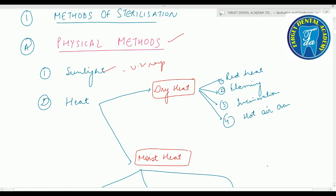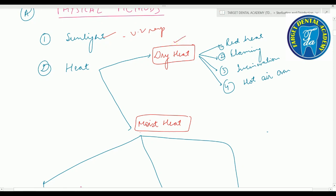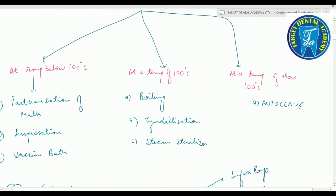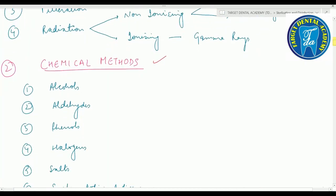The second physical method is heat, which has two types: dry heat and moist heat. Dry heat consists of four methods: red heat, flaming, incineration, and hot air oven. Moist heat has three categories: at temperature below 100°C — which includes pasteurization, inspissation, and vaccine bath; at 100°C — which includes boiling, tyndallization, and steam sterilizer; and above 100°C — using autoclave.